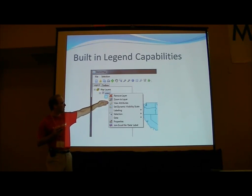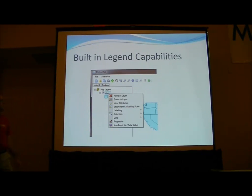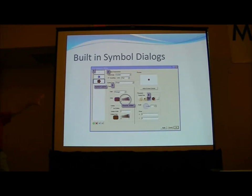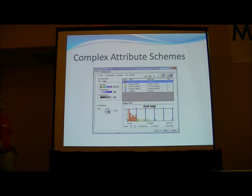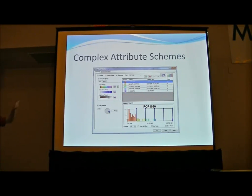You've got remove layer, zoom layer, view attributes, labeling, selection, data properties, join an Excel file to the data layer — some of these capabilities are brought up just by right-clicking on a layer. Then some dialogues you access through properties, where you can take very precise control of the symbolic representation and do complex attributes. All of this is from the user's perspective, but just by dragging the legend on, you can control all of the functionality.